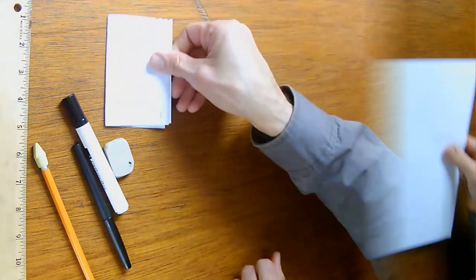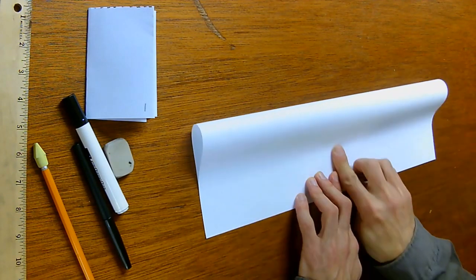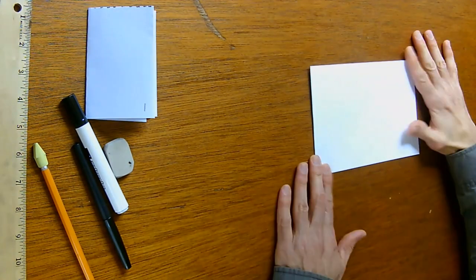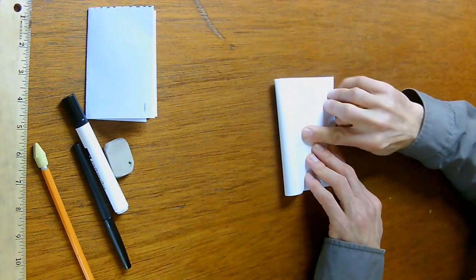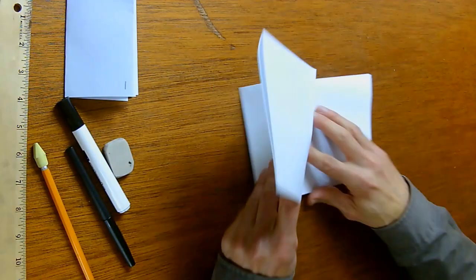Let's also try this. If you have 11 by 17 paper, you can do the same fold. Fold number one, top down. Fold number two, left side over. Fold number three, left side over again. And look at these two together. Clearly 11 by 17 gives you double the page size as eight and a half by 11. So let's go with this one.